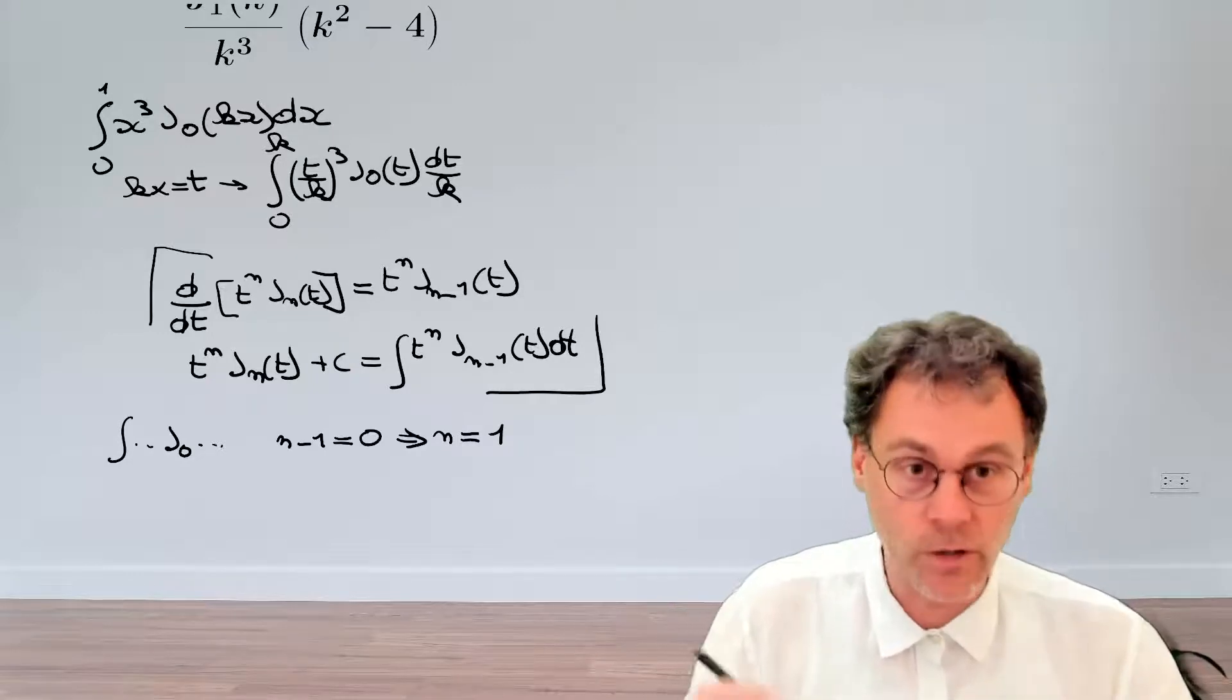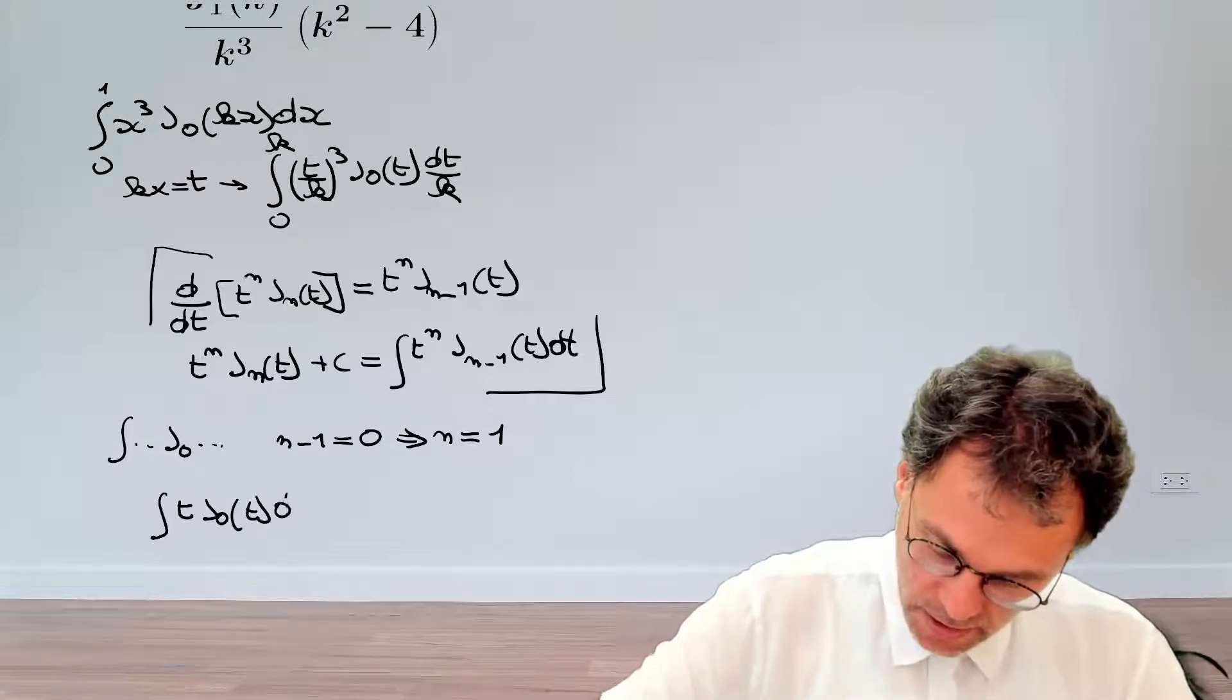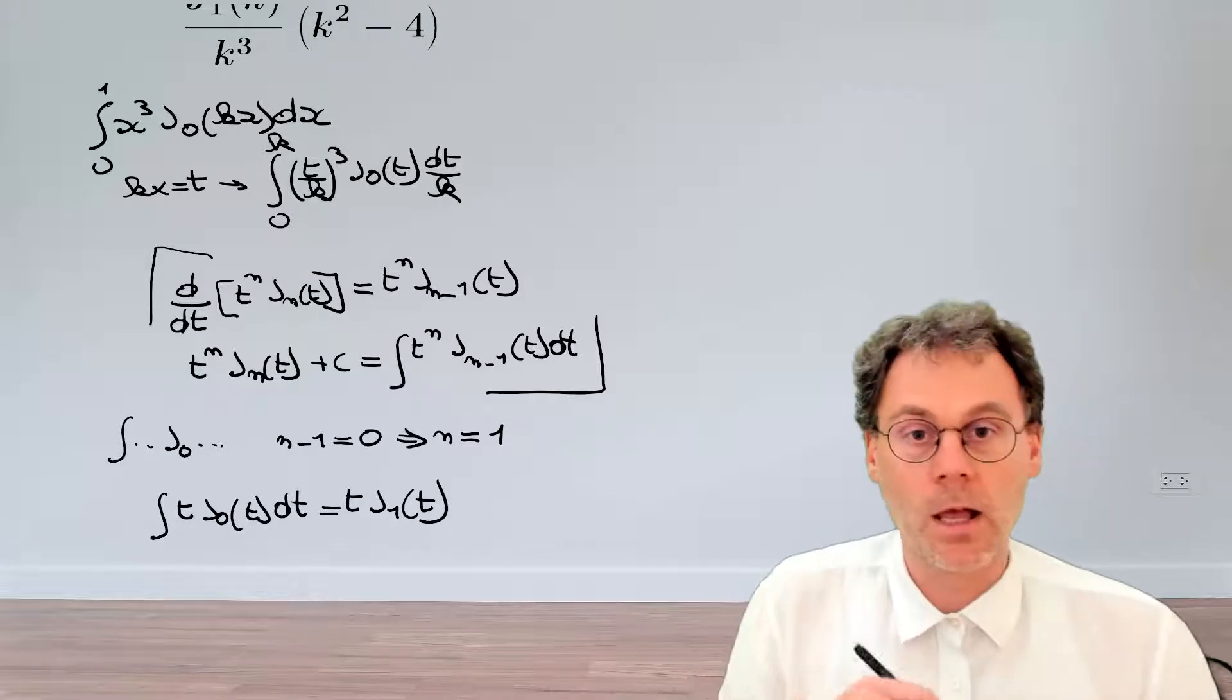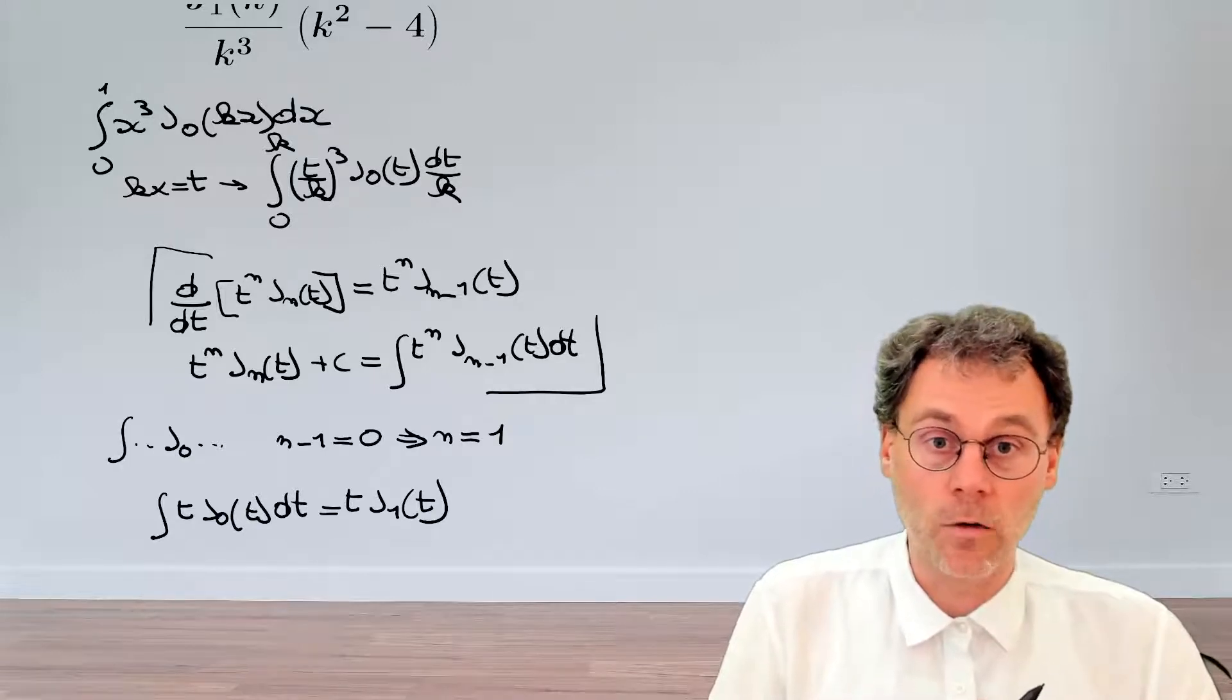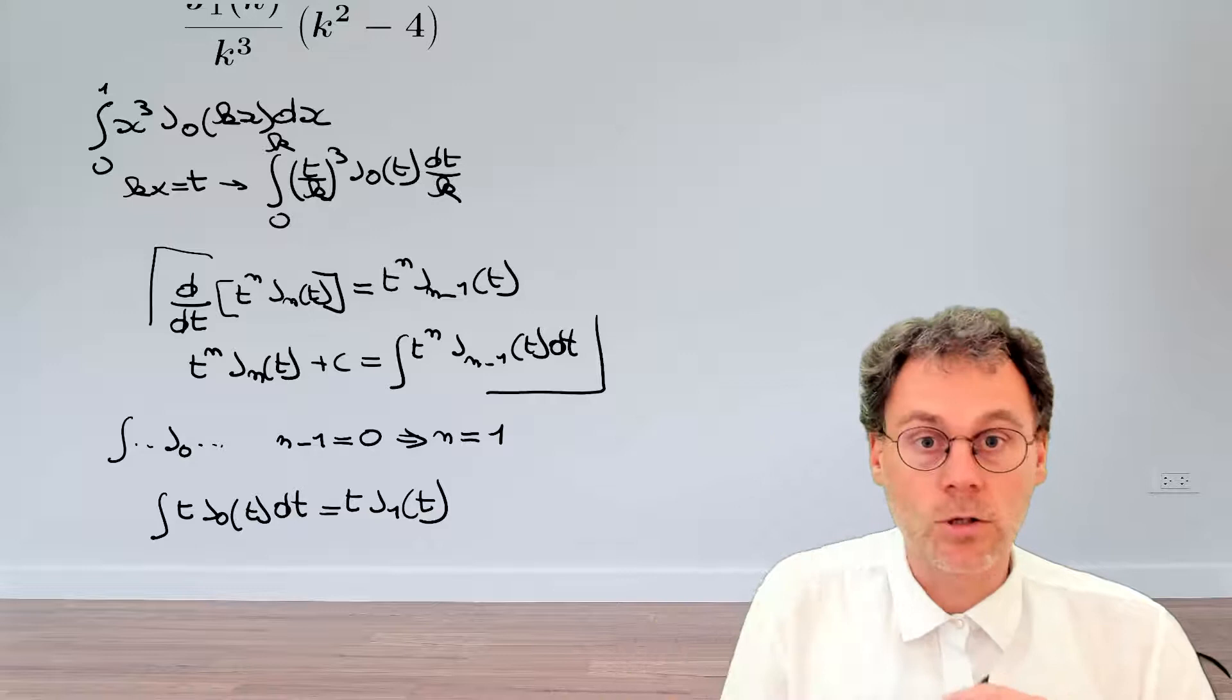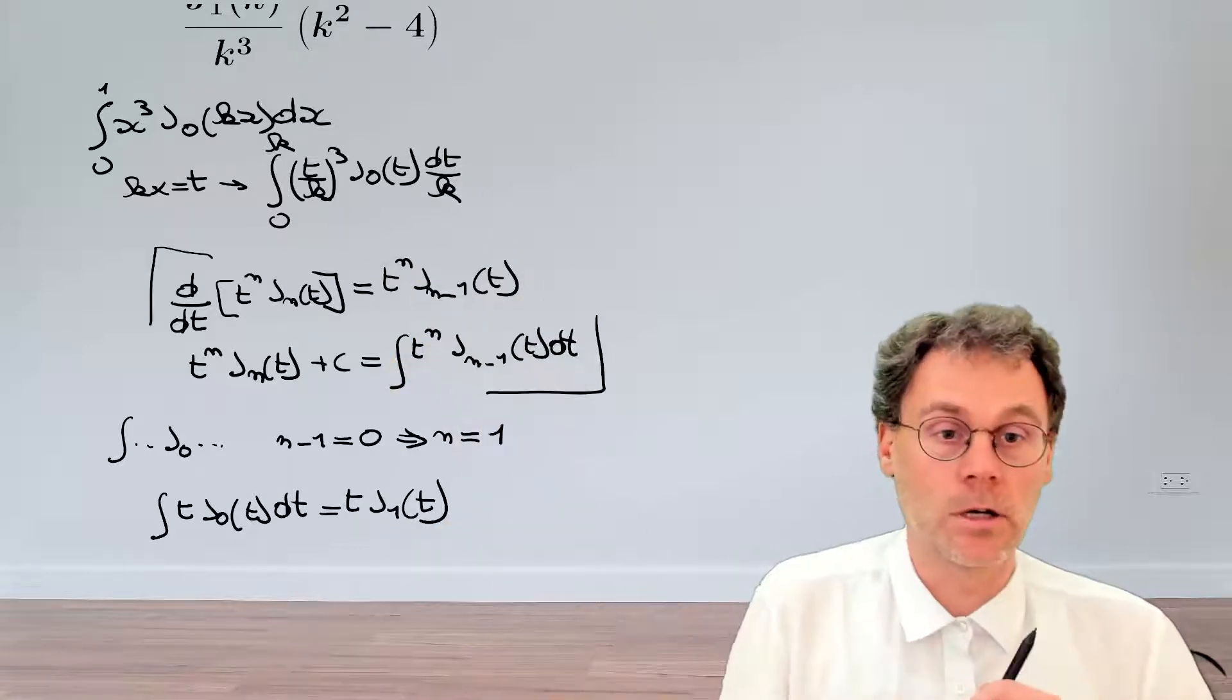Or if we bring everything together, we know that the integral of t J_0(t) dt is equal to t J_1(t). This seems like a very useful result to have for our particular integral here. Of course, the drawback is that this is not the integral we need to solve because there's extra factors involved there. So this is a good point to pause and see if you can apply this particular formula to tackle our integral up there.